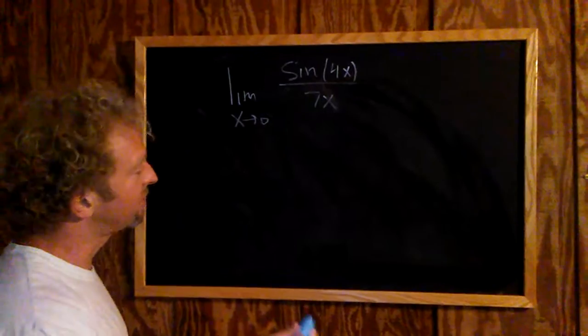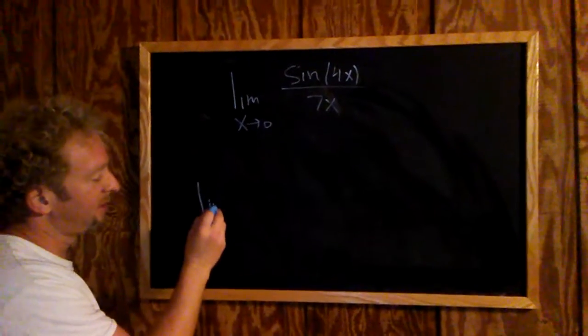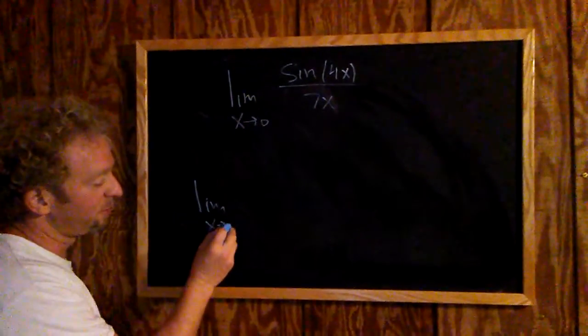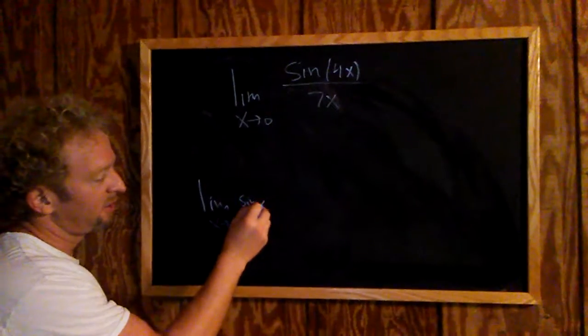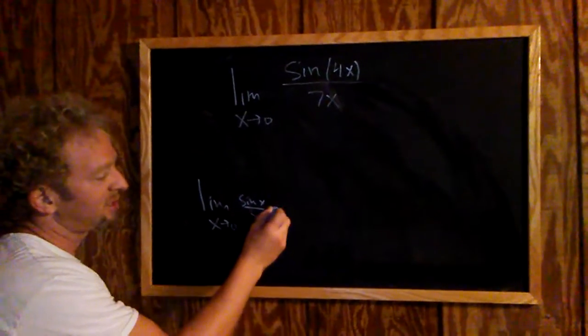The idea here is that we're going to use the fact that if you take the limit as x approaches 0 of sine x over x, you get 1.